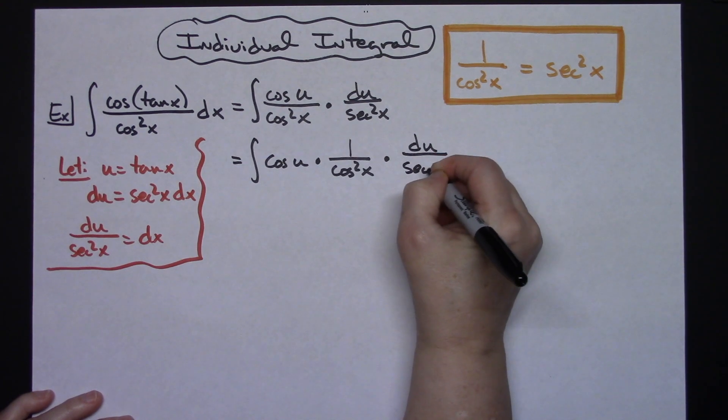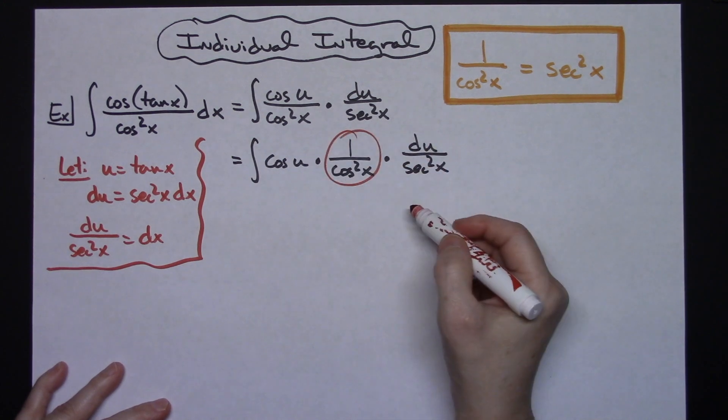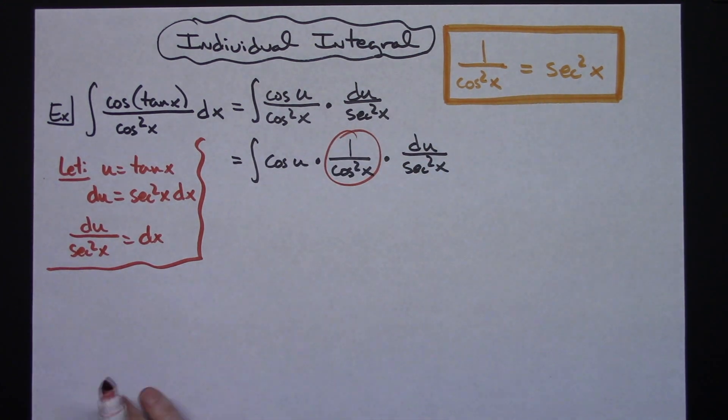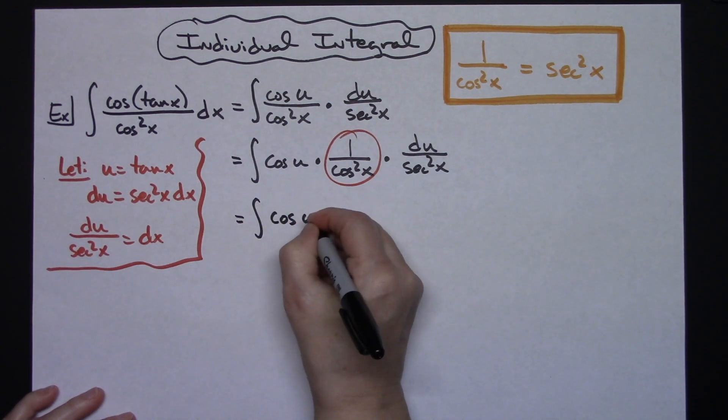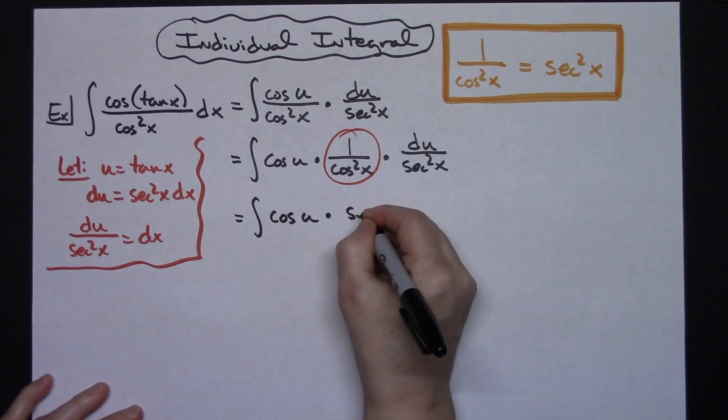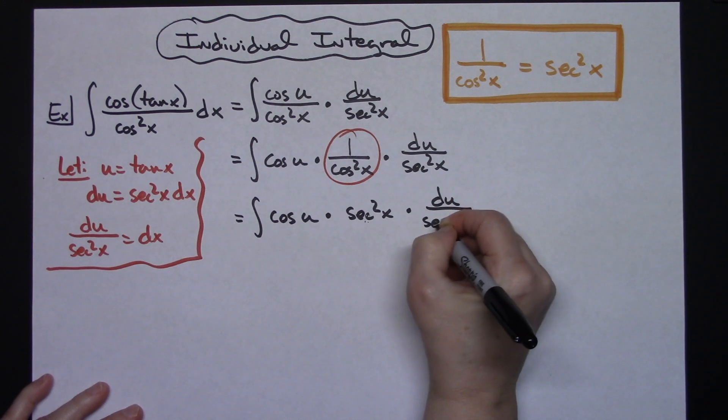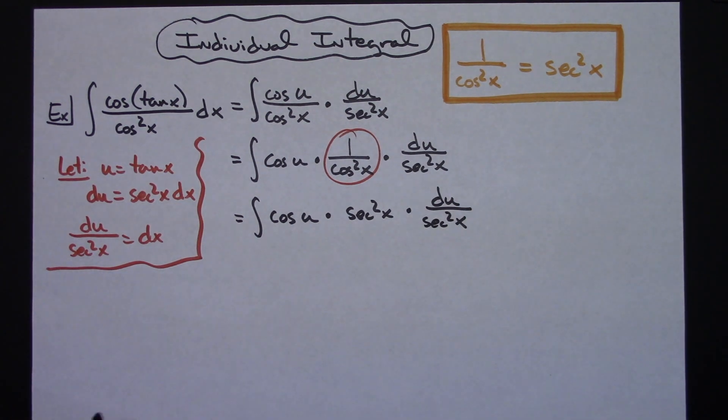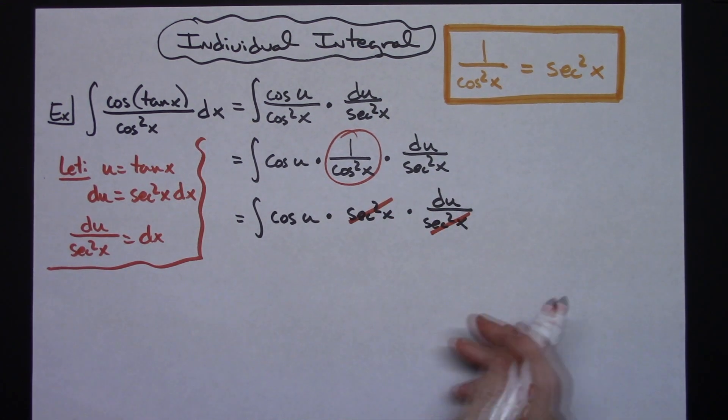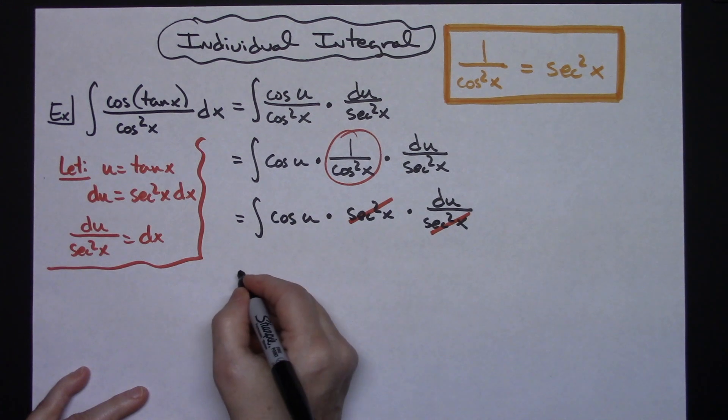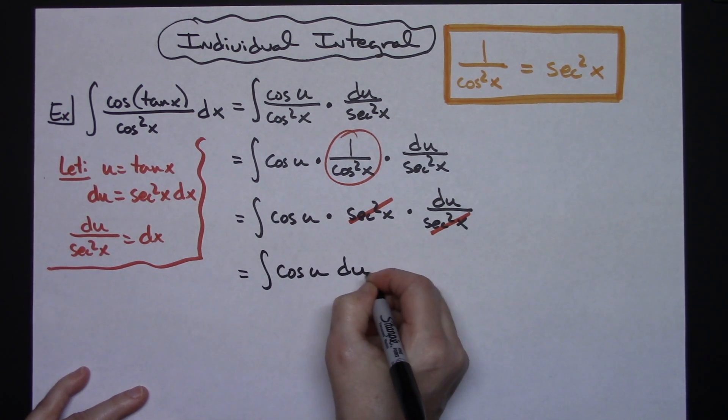I can replace it with secant squared x, so I'll have cosine u times secant squared x times du over secant squared x. At this point, the secant squared x is in the denominator and numerator, so I can cross them out. That's where we wanted to get, because now I'm down to the integral of cosine u du, which is one of our basic trig integrals.